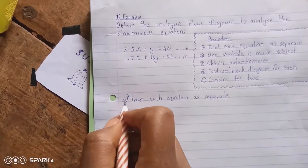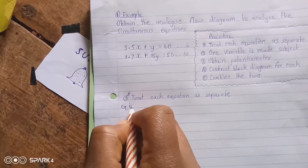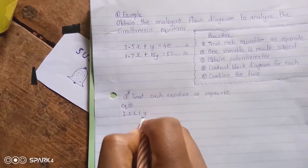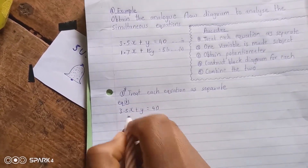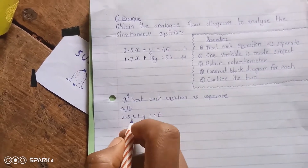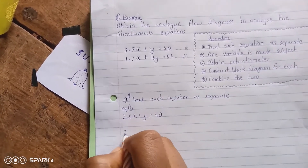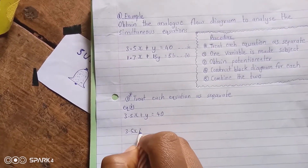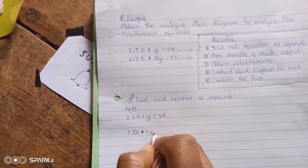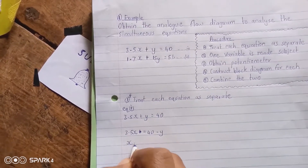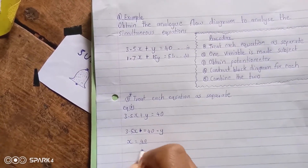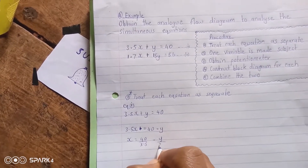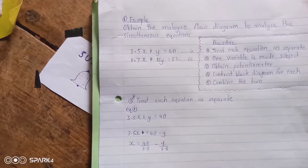We start with equation 1, which is 3.5x plus y equals 40. Making x the subject of the formula, we have 3.5x equals 40 minus y, so x equals 40 divided by 3.5 minus y over 3.5.